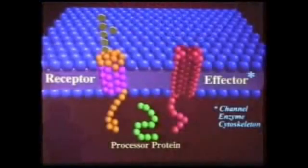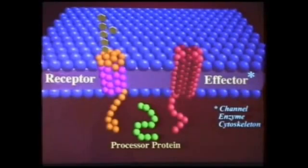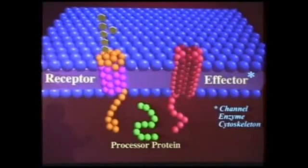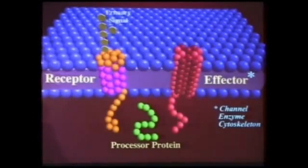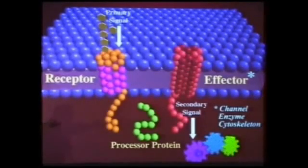There are two classes of proteins built into the membrane. First are receptors — like your eyes, ears, nose, taste, touch, pain, and pressure receptors built into your skin. Second are effectors. The switch has two functions: one to receive the primary environmental signal, and the second to send a signal into the cell to engage the protein machinery — that's what the effector does.